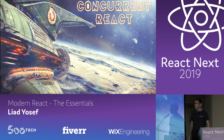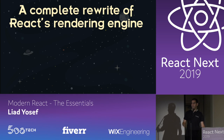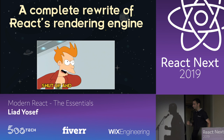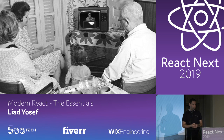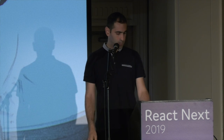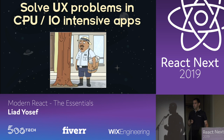Let's continue to concurrent React. Concurrent React is a new way React's rendering engine is built — it's a complete rewrite of React's rendering engine. Andrew Clark gave a great talk about this at React Conf, though it was somewhat shadowed by the hooks proposal. Concurrent React is a way to solve problems that happen in CPU or IO-intensive apps.